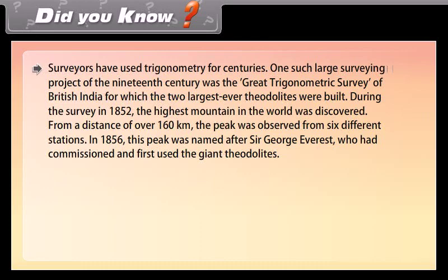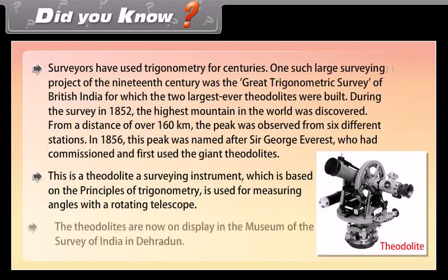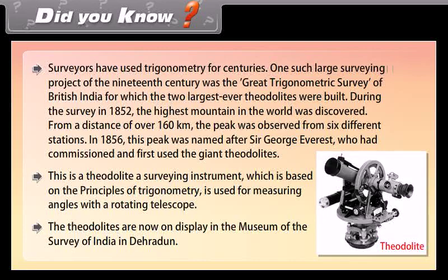Surveyors have used trigonometry for centuries. One such large surveying project of the 19th century was the great trigonometric survey of British India, for which the two largest theodolites were built. During the survey in 1852, the highest mountain in the world was discovered. From a distance of over 160 kilometers, the peak was observed from six different stations. In 1856, this peak was named after Sir George Everest, who had commissioned and first used the giant theodolites. This is a theodolite, a surveying instrument which is based on the principle of trigonometry and is used for measuring angles with the rotating telescope. The theodolites are now on display in the Museum of the Survey of India in Dehradun.